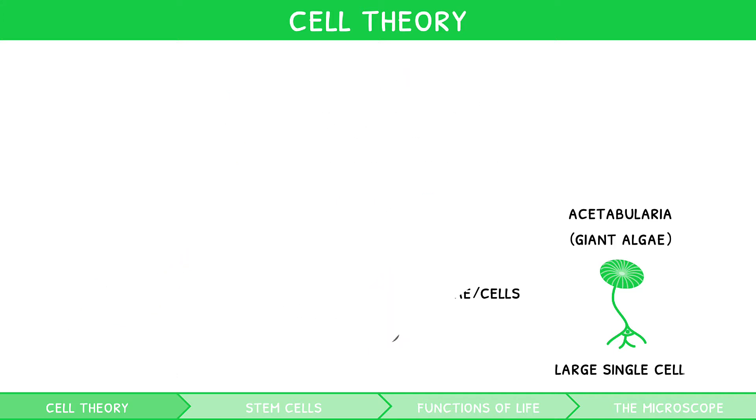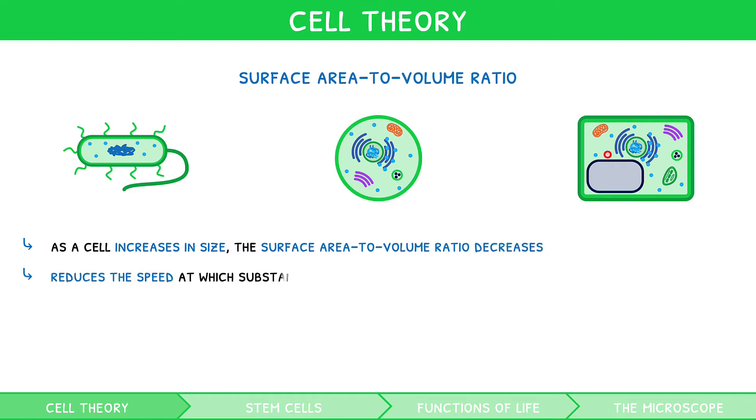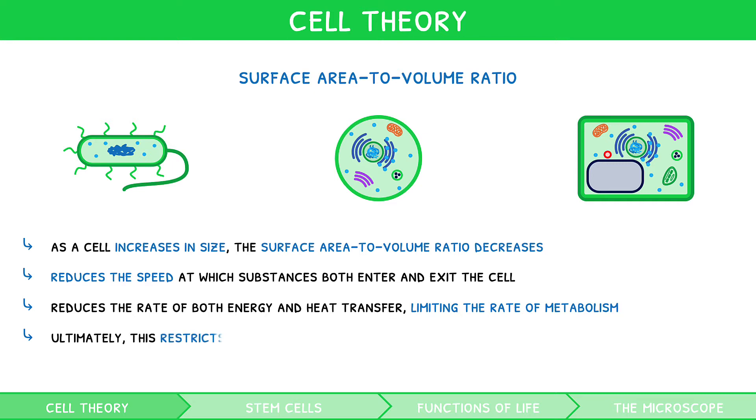In general, cells can all be different shapes and sizes. However, as a cell grows, it is limited by its surface area to volume ratio. As a cell increases in size, the surface area to volume ratio decreases. This is important, as it reduces the speed at which substances both enter and exit the cell. This therefore reduces the rate of both energy and heat transfer, limiting the rate of metabolism. Ultimately, this restricts the size of the cell, hence why most cells are small.